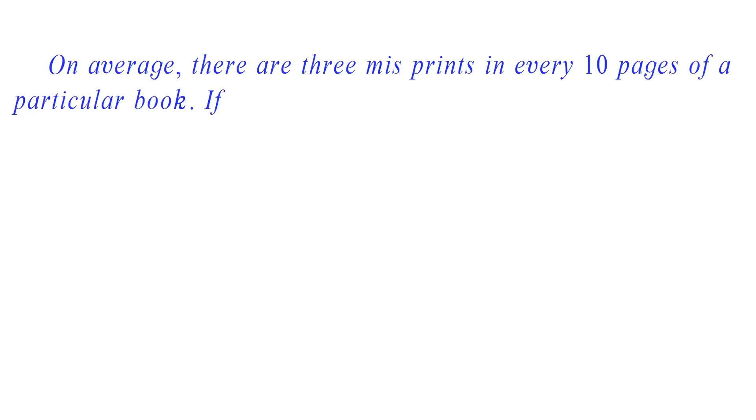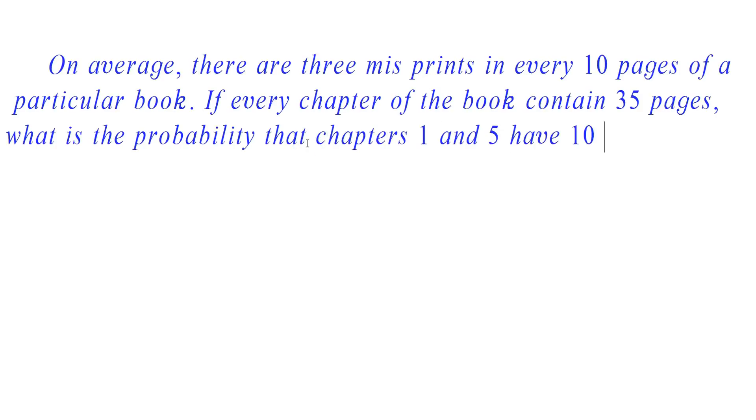Hello friends, in this section we learn to solve problems in Poisson distribution. Here the question is, on average there are 3 misprints in every 10 pages of a particular book. If every chapter of the book contains 35 pages, what is the probability that chapters 1 and 5 have 10 misprints each?